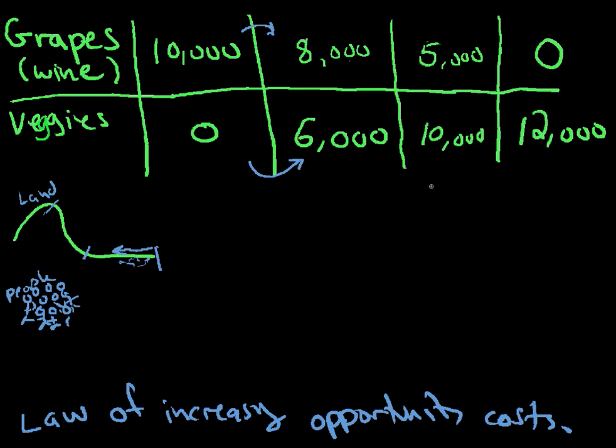Now let's see what happens when you try to grow more vegetables. You start to take grapes out of the vegetable land. And now you start to take grapes out of this land up here. What happens in that case? Now you're starting to take grapes out of some pretty good grape land. So it's going to cost you some more. Here you lost 2,000 pounds of grapes. Here you went from 8,000 to 5,000. You lost 3,000 pounds of grapes. And now you've only gained 4,000 pounds of vegetables. You gained 6, and now you've only gained 4,000. This land is not perfectly adaptable to alternative uses.